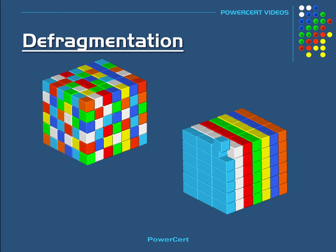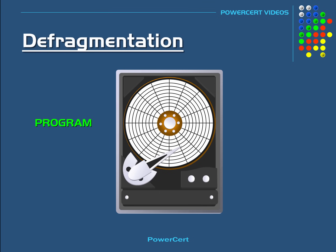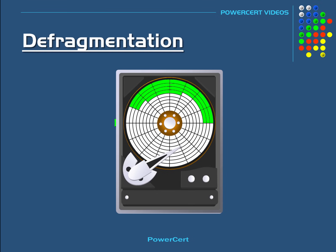After the defragmentation is complete, the files on your hard drive will look something like this, where all the related files are together and everything is nice and organized. For another example, let's install a program on this empty hard drive. As it installs, notice how the files for that program are in close proximity to each other and are not scattered in different locations — they are close together.